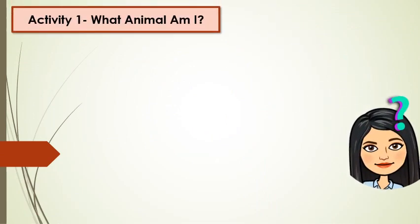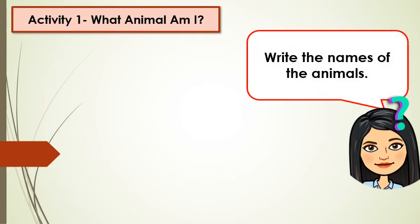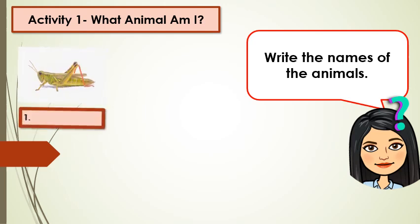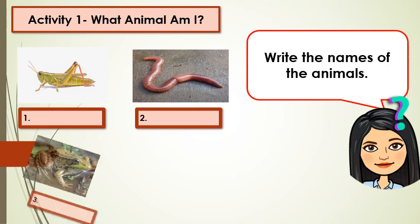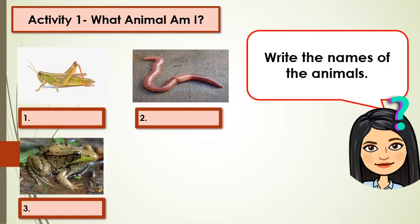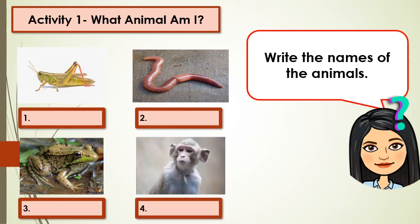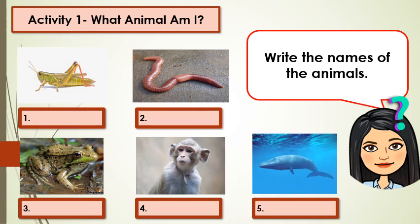Now, let's have some activities. I want you to get your paper and pencil. Activity 1: What animal am I? Write the names of the animals shown. Number 1, what do you call this animal? Write its name. Number 2, what do we call this animal? Number 3, write the name of this animal. Number 4. Number 5, what is the name of this animal?